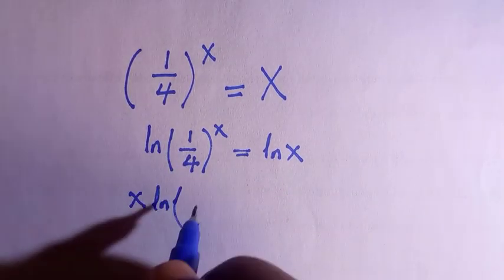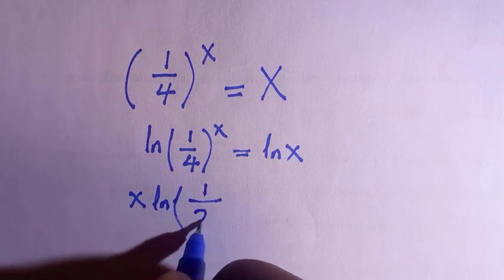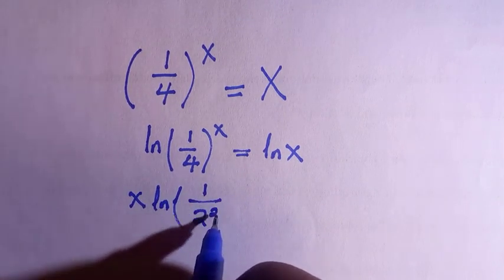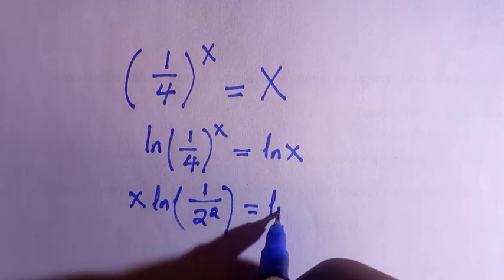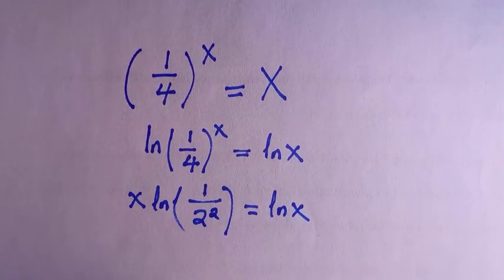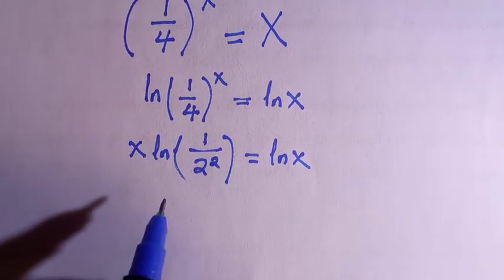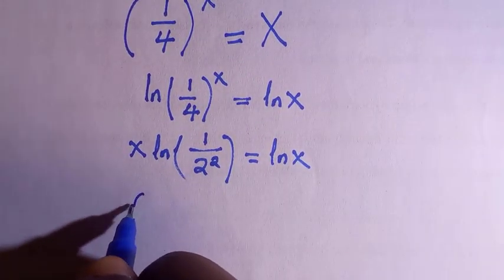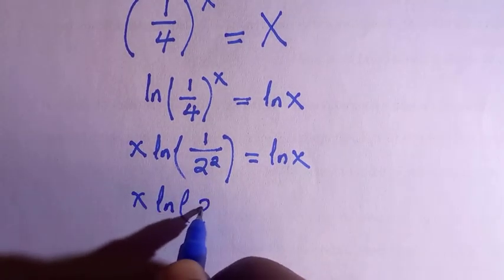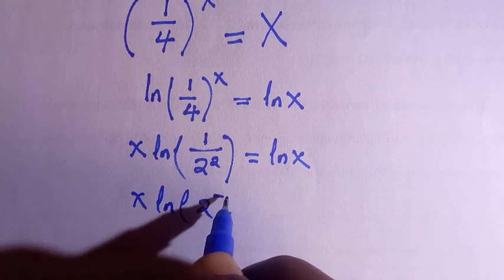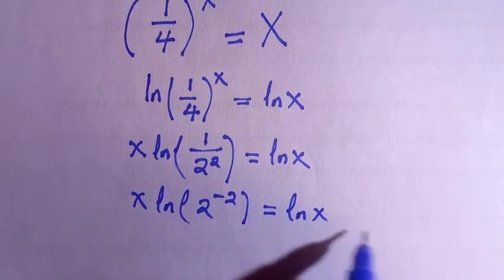This 1 divided by 4 can be written as 1 divided by 2 to the power of 2, since 2 squared is 4. So everything equals ln x. Then, 1 divided by 2² can also be written as 2 raised to the power of negative 2, and this equals ln of x.